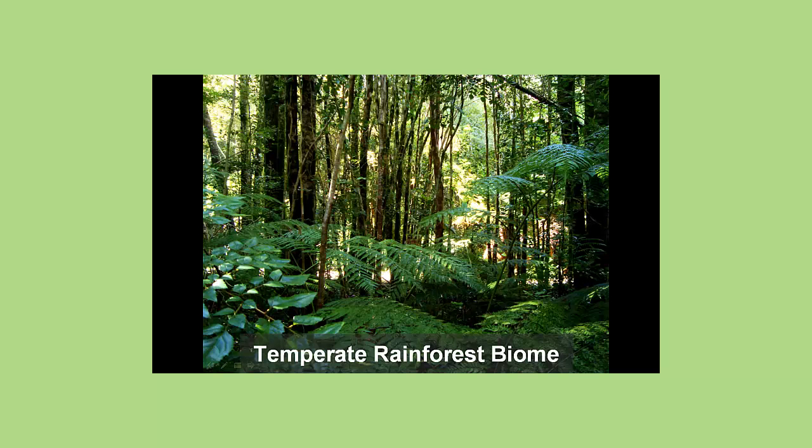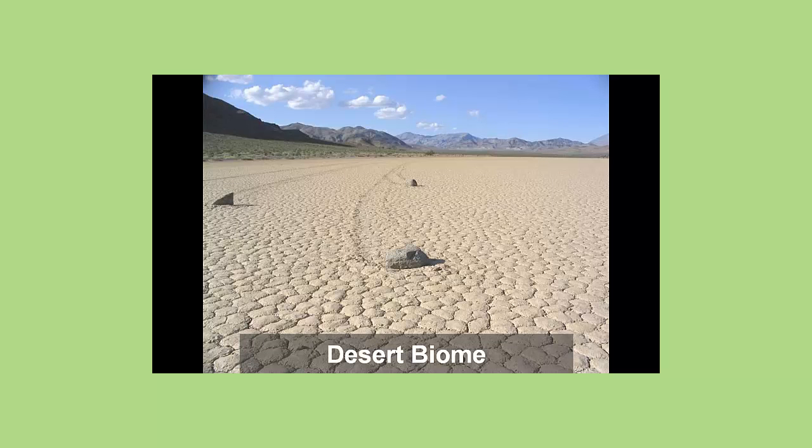You likely already know lots about these biomes. If you live near the BC coast, you live in a temperate rainforest biome, characterized by mild temperatures and lots of rain. If you visit Death Valley in California, you would be in a desert biome, characterized by little rain and very hot temperatures. In fact, the hottest temperatures ever recorded were taken in Death Valley.